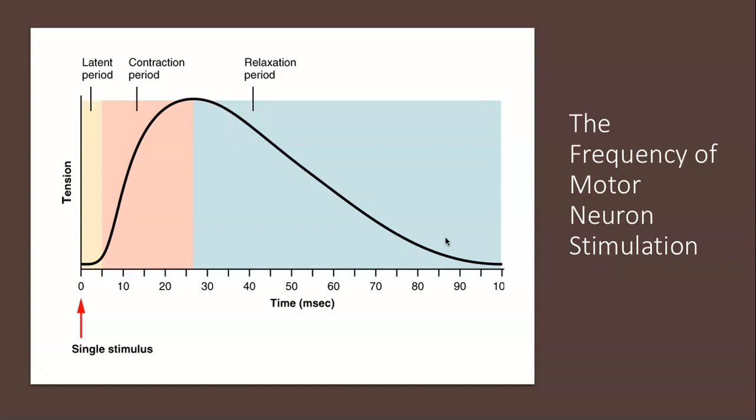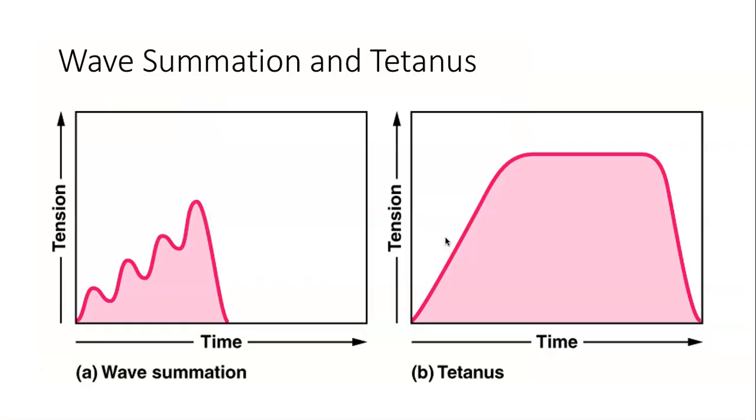The rate at which a motor neuron fires action potentials affects the tension produced in the skeletal muscles. If the fibers are stimulated while previous twitch is occurring, the second twitch will be stronger. You can see here the first twitch, the second twitch is stronger, third and fourth, and we continue on until there's the resting phase where it falls.